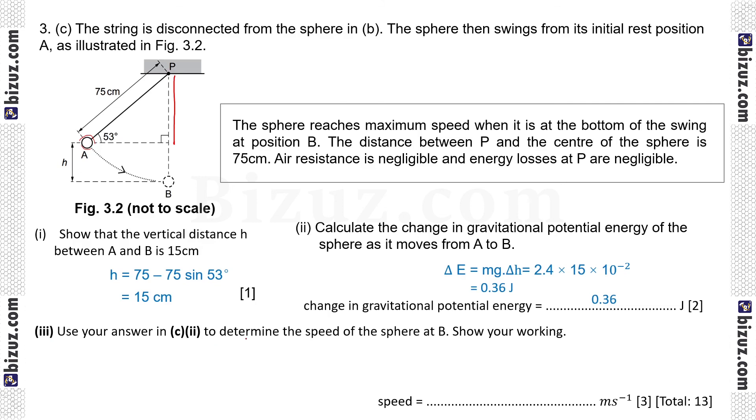C3, use your answer in C2 to determine the speed of sphere at B. Show your working. Kinetic energy at B is equal to half Mv square. V is the speed at B. We can write this kinetic energy is equal to 0.36 because change in gravitational potential energy is converted to kinetic energy. So kinetic energy is equal to 0.36 is equal to half Mv square. Here weight is given 2.4 divided by 9.81. So it is converted to mass and then V square. After simplification we can get V is equal to 1.7 meter per second.